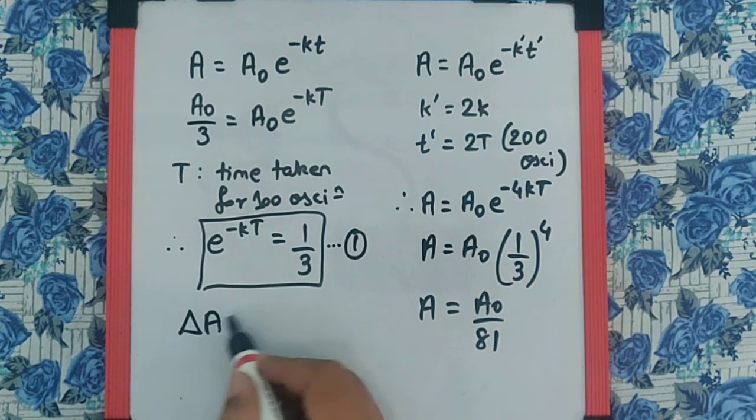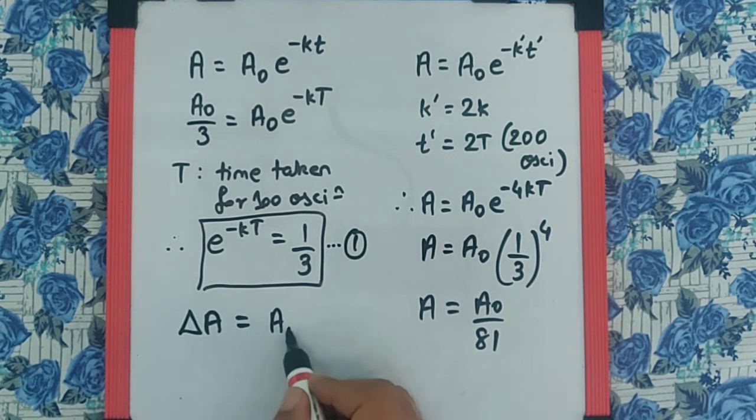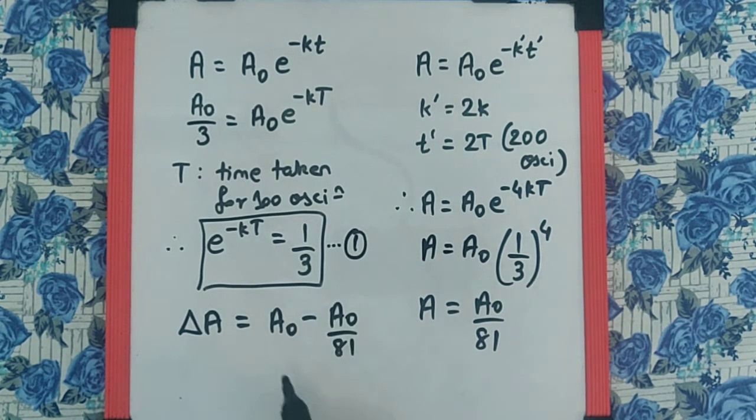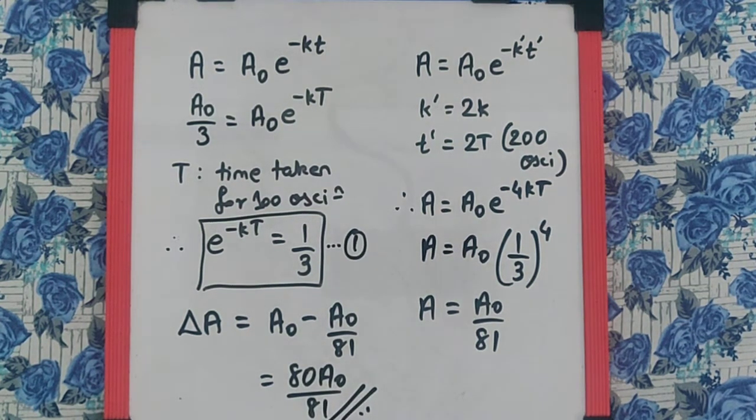So I can say the ΔA is nothing but A₀ minus A₀ by 81, which when solved, we get 80A₀ by 81. And that is the final answer.